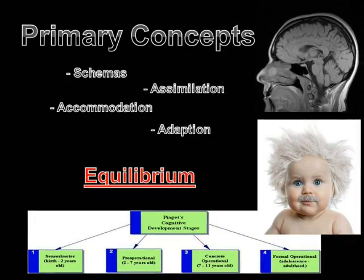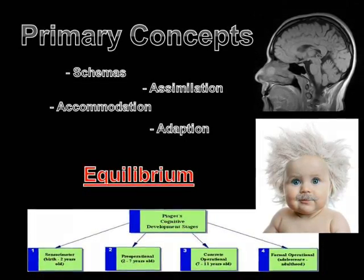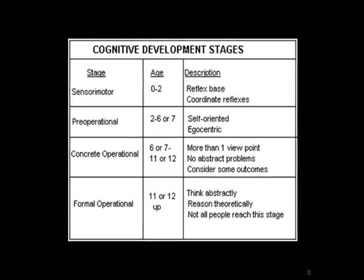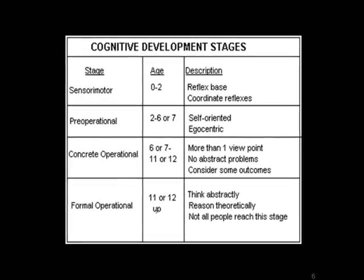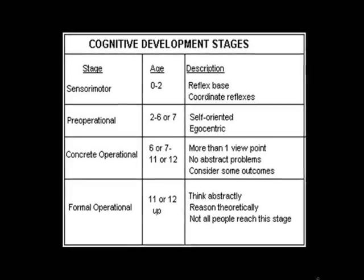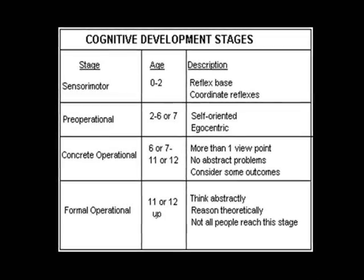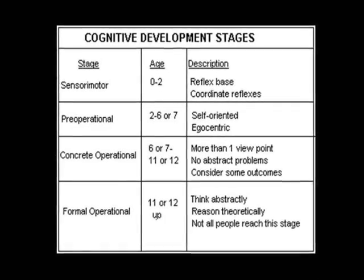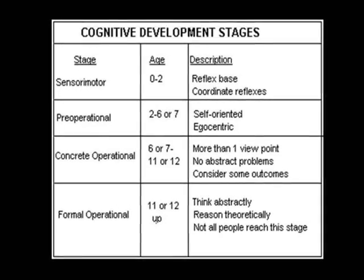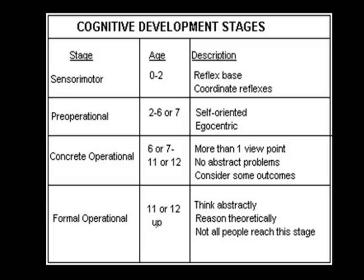A perfect balance of assimilation and accommodation is the ideal state of learning and represents a good understanding of our world. This ideal state is called equilibrium. Through this unique understanding of learning, Piaget introduced four general stages of development a child goes through: first, the sensory-motor stage, 0 to 2 years; second, the pre-operational stage, 2 to 7 years; third, the concrete-operational stage, 7 to 11; and finally, formal-operational, which is 11 and up.